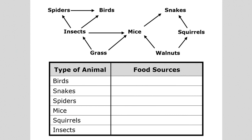In this table, we'll be collecting information about the food sources for each type of animal. It's important to remember that the arrows point from the producer to the consumer, or from the prey to the predator. So we'll be looking at the arrows that are pointing toward each type of animal.